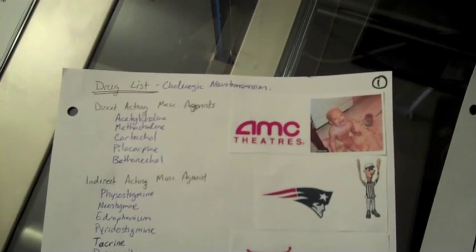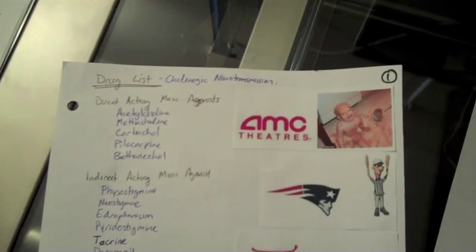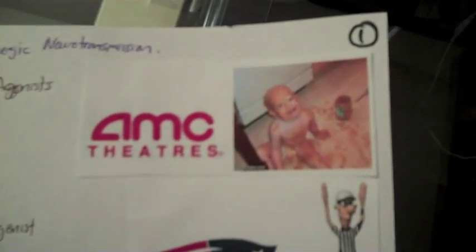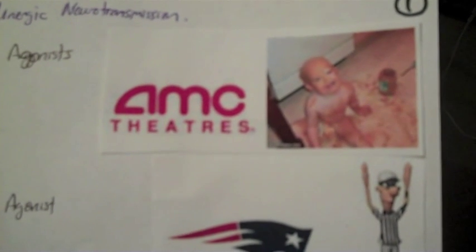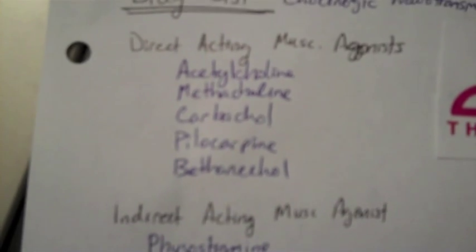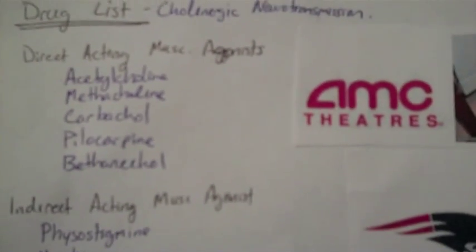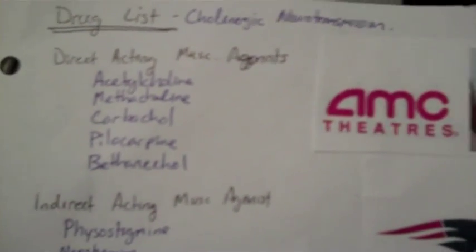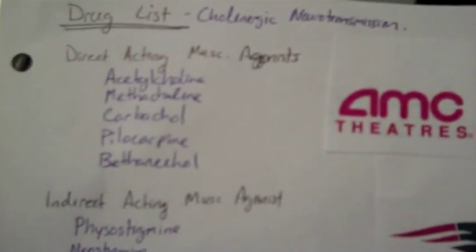First we'll start off with the cholinergic neurotransmission. The first picture has AMC theaters and a little baby covered in peanut butter. The initials AMCPB help me remember the direct-acting muscarinic agonists, which are acetylcholine, methacholine, carbachol, pilocarpine, and bethanechol. I realize there are more drugs, but these are the main ones I'm supposed to learn.